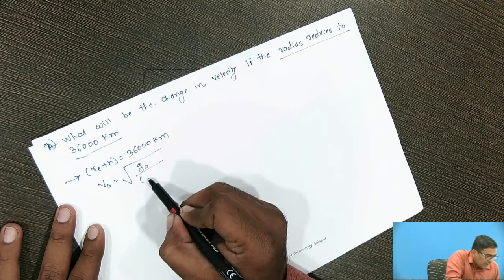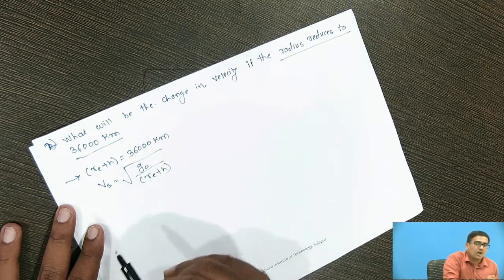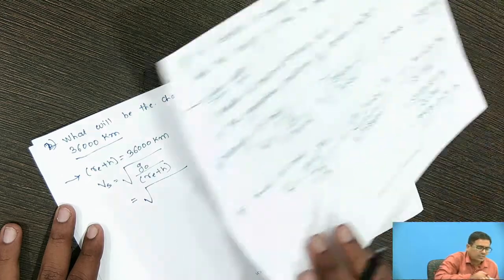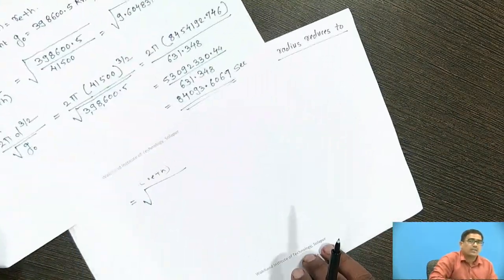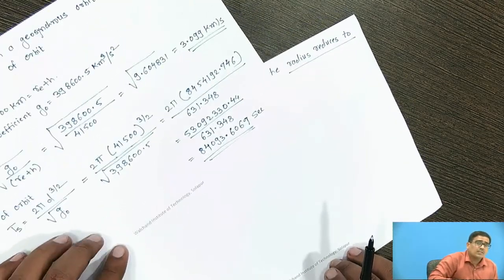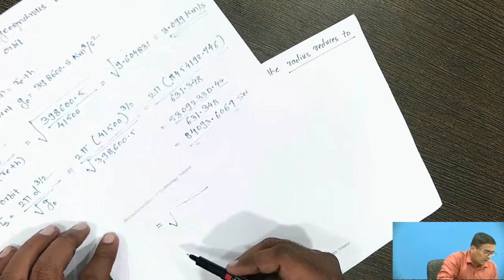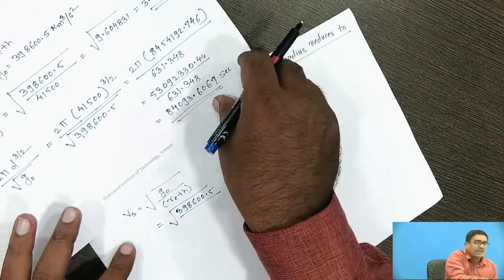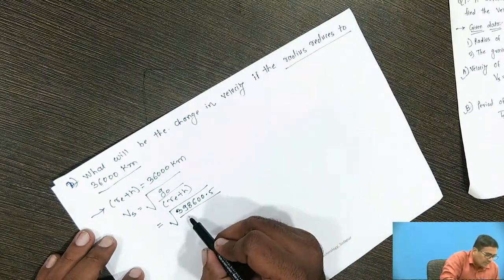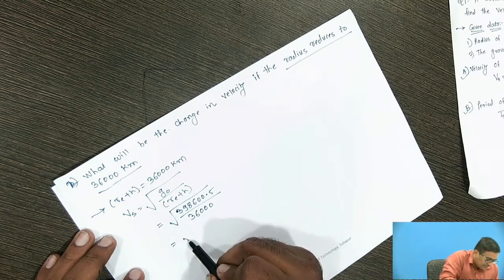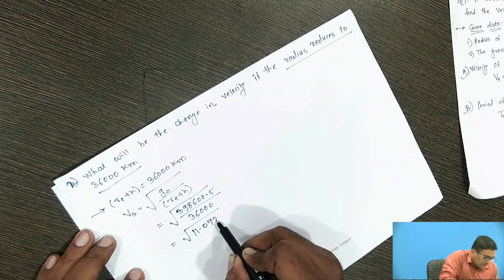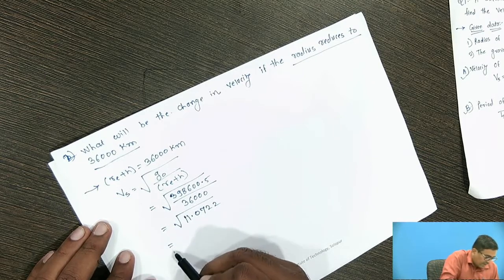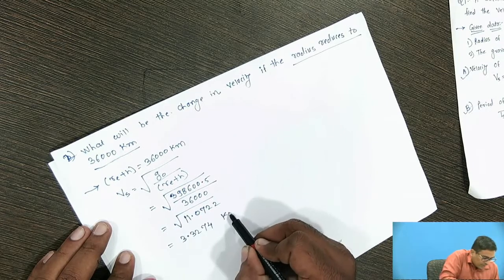The formula is Vs = √(G0 / (Re + H)). Substituting: Vs = √(398600.5 / 36000) = √11.0722. Solving this gives Vs = 3.3274 km/s.